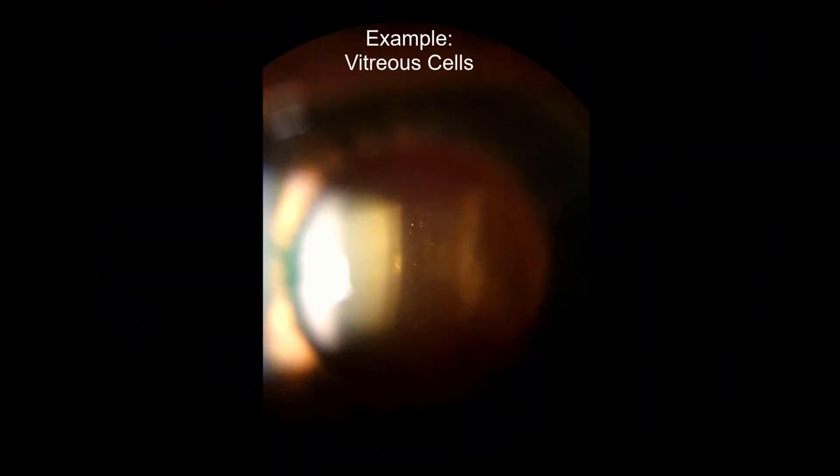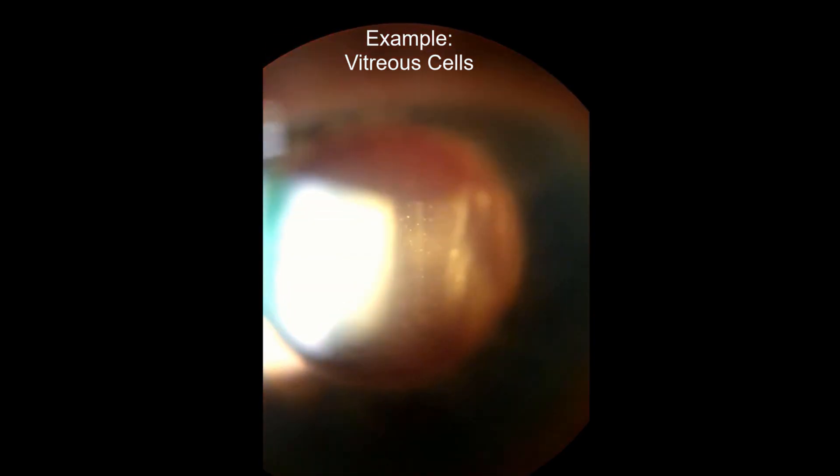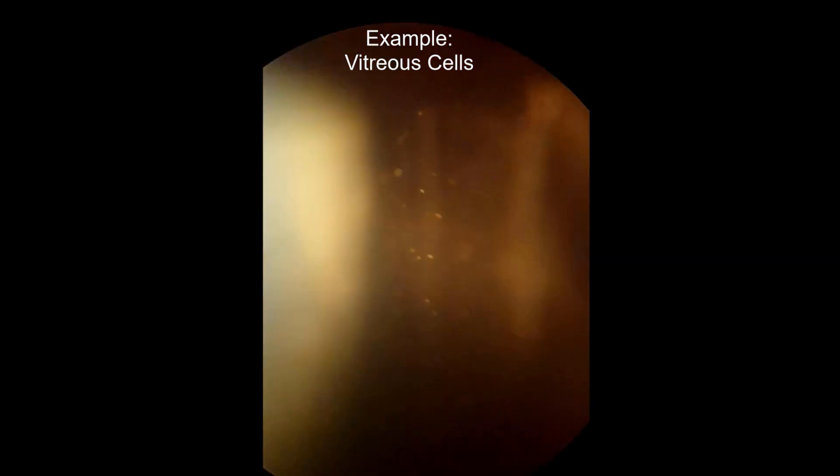If you shorten the height of the beam and use about a 45 degree angle, you can examine the anterior chamber. You can also focus further back into the vitreous to look for cells or tobacco dust.